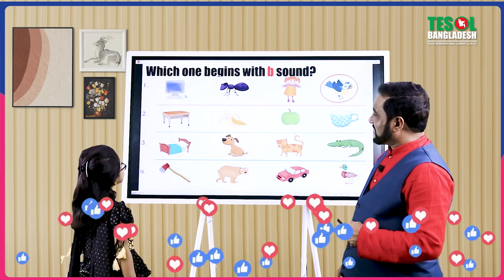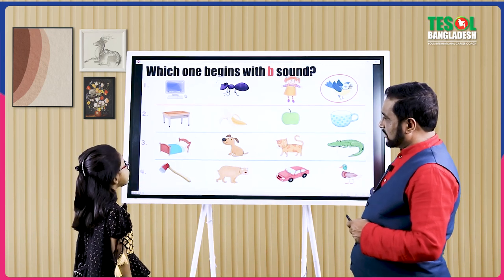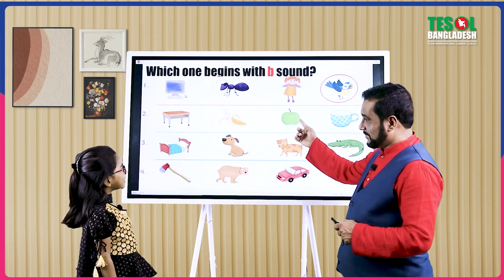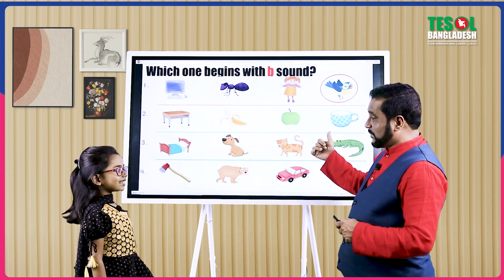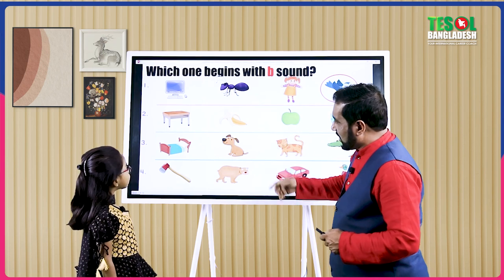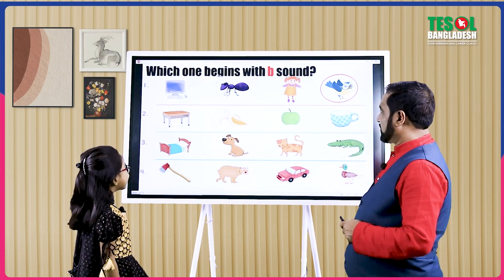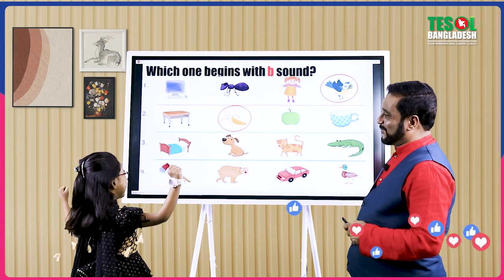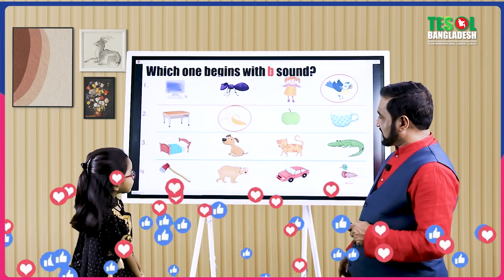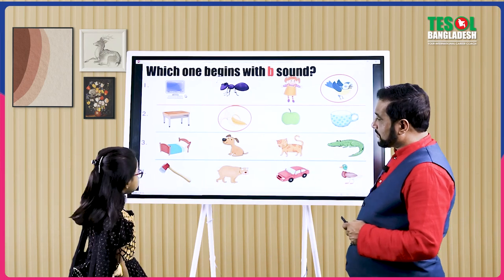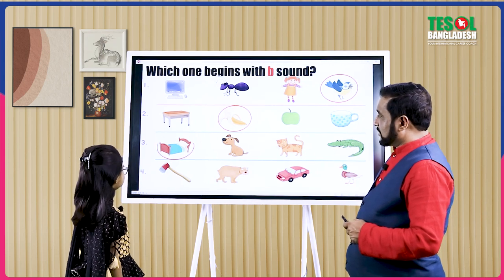Okay, and now the second row. Which one begins with B sound? Bananas. No, that's an apple — it begins with A sound. Then which one is the banana? B. Let's check then. You won. Right. Okay, now the third row. Which one begins with B sound? Bed. Yeah, bed. That's true. That is bed.